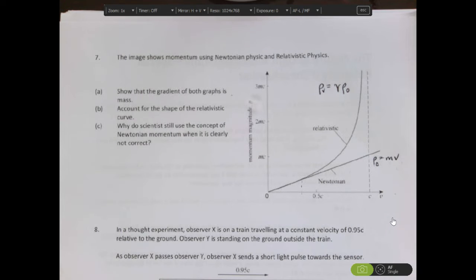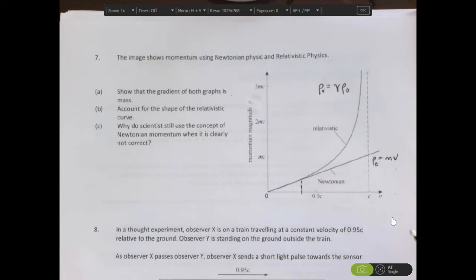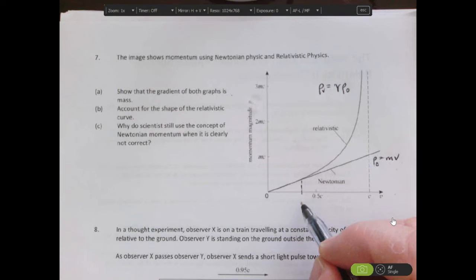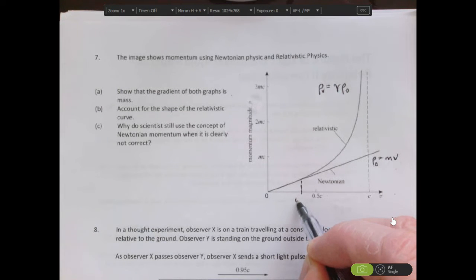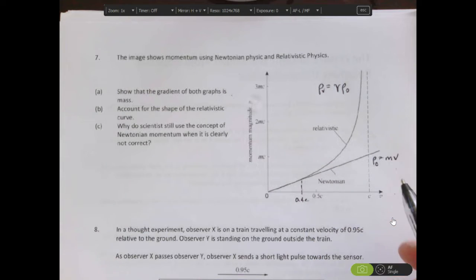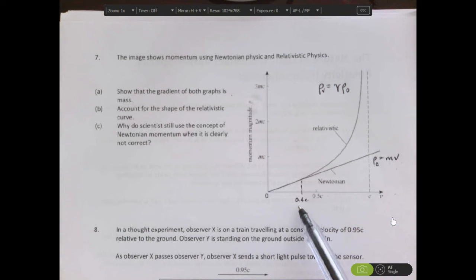In reality, this over here is rho-naught or p-naught. What really we need to have a look at is up until about this point here, these two graphs are really the same graph. They are coincidental. And this looks, if you estimate, it's about 0.4c, which is four-tenths of the speed of light. That's a very fast speed.